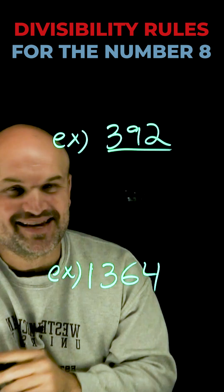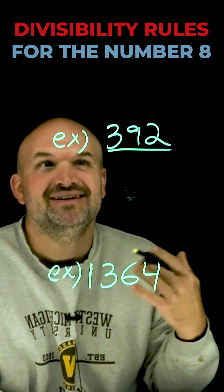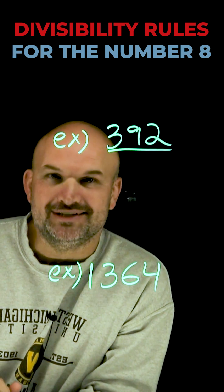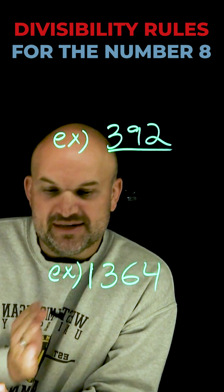Now, obviously, the last three digits of this example can't be 000, because then they'd just be 000, right? So, let's go and see. How can we determine if 392 is divisible by 8? There's a couple ways we could look at that.